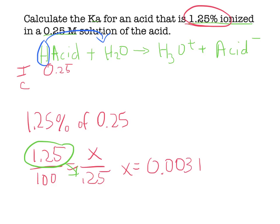That means my change is going to be 0.0031, so at equilibrium I have 0.25 minus 0.0031. Since it's only 1.25% ionized, we're going to say it's approximately equal to 0.25.